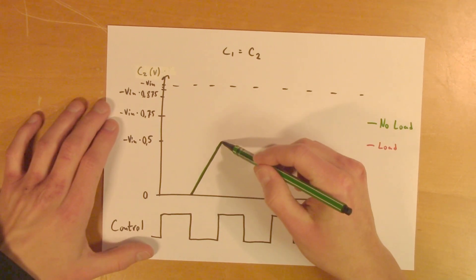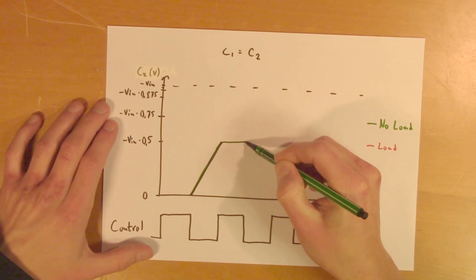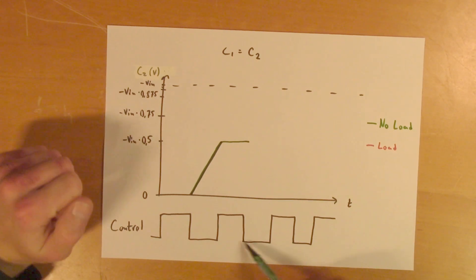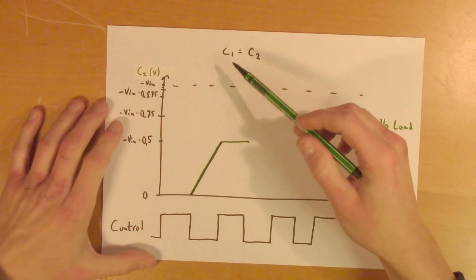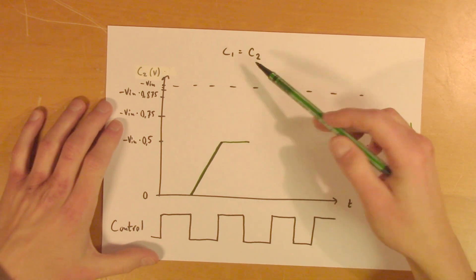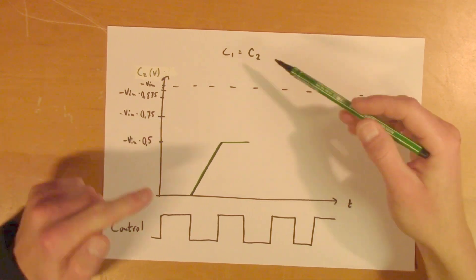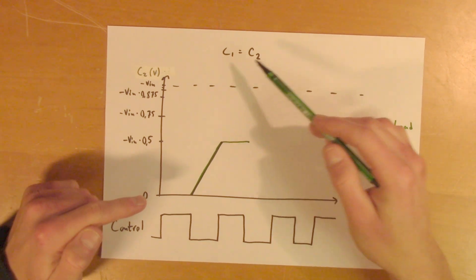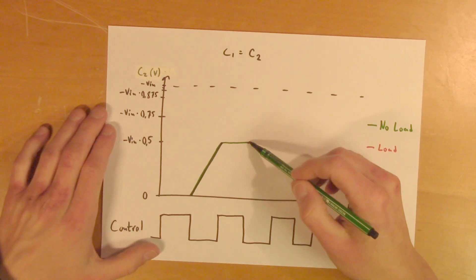In the second cycle, C1 is charged once again, and nothing happens to C2. And then in the second part of the second cycle, C1 will transfer its charge to C2 once again. This time, when balance has occurred between the charges of C1 and C2, it will raise to